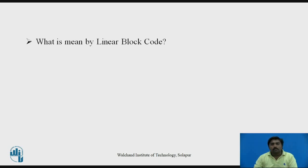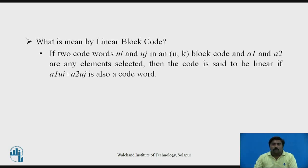Before starting the actual session, let's recall what is meant by linear block code. It means that if you have two codewords ui and uj in an (n, k) block code, and a1 and a2 are any selected elements, then the code is said to be linear if a1·ui + a2·uj is also a codeword — similar to the linear property from mathematics.